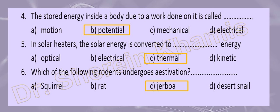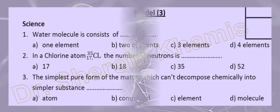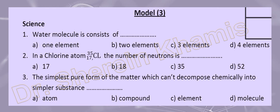We are going to the third exam, model three. We also have six questions in each exam. Model three, question one: water molecule H₂O. We have two elements inside it — hydrogen and oxygen. H₂O has two atoms of hydrogen and one atom of oxygen, giving three atoms total. But since the question asks for number of elements, the right answer is two elements.